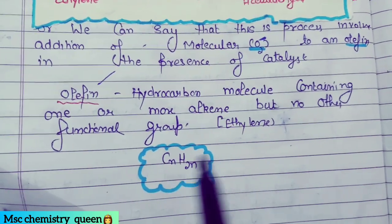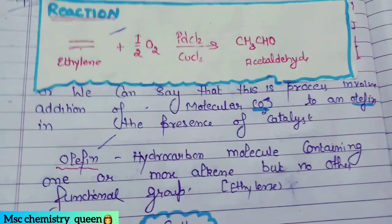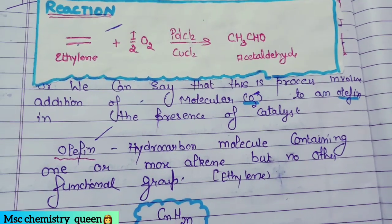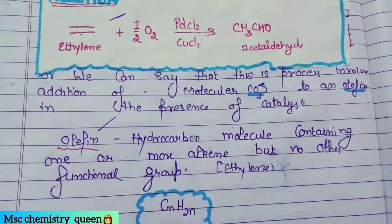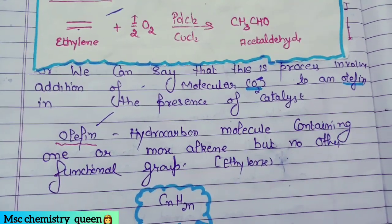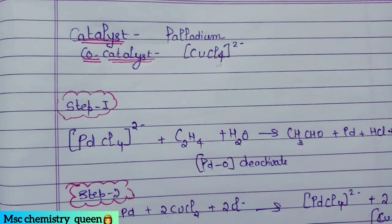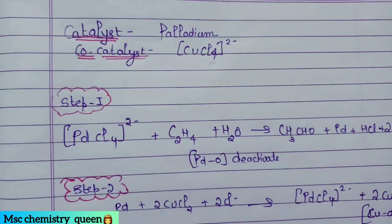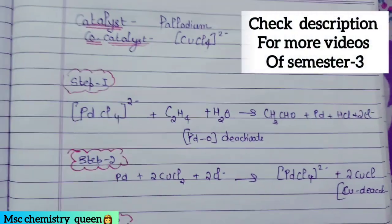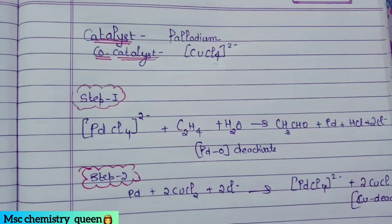When we add oxygen in the presence of catalyst and co-catalyst, ethylene converts into acetaldehyde — that is the main purpose of this reaction. This reaction can come in 4-mark and 6-mark exam questions. Subscribe because I am covering all semester 3rd topics. Check which catalyst is palladium and which co-catalyst is copper chloride.